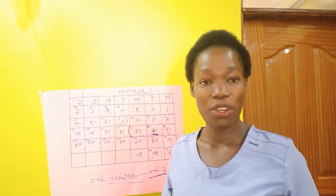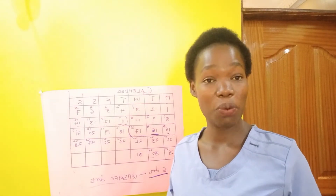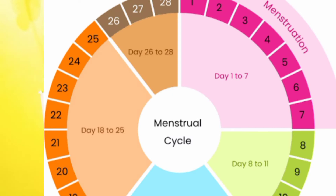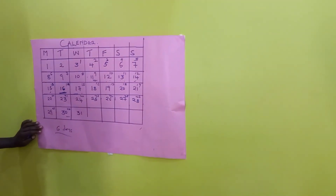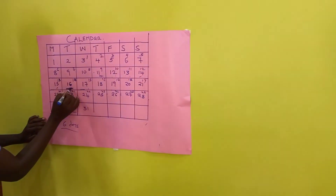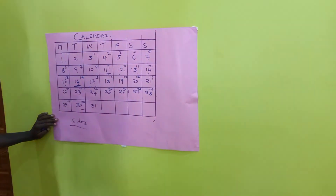Your fertile window is five days before your ovulation and one day after the ovulation day. You can use this method whether you are a 30-day cycle or any other cycle — it just depends on how you calculate. You apply the five days before and one day after the ovulation day.